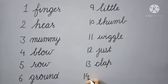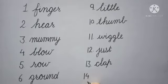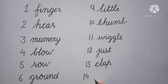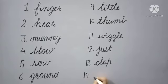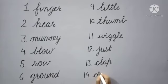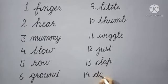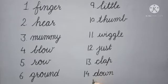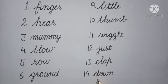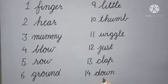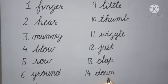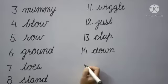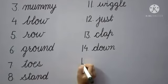Next, number 14: 'down'. What is the spelling of down? D-O-W-N, down. Down means 'neeche' (below/downward).